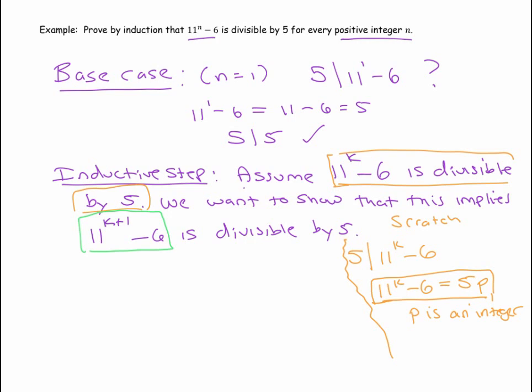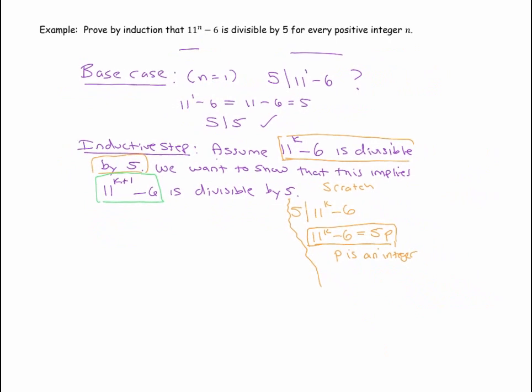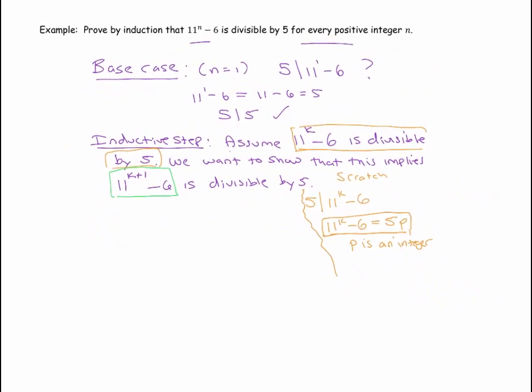We're going to start with, give myself more space here. We're going to start with the fact that 11 to the k plus 1 minus 6, and I'm going to rewrite that as 11 to the k times 11 to the 1, simply because it doesn't seem like there's anything else I can really do at that point. Now, I need to show that this is divisible by 5. In other words, that I can write it as 5 times some integer.